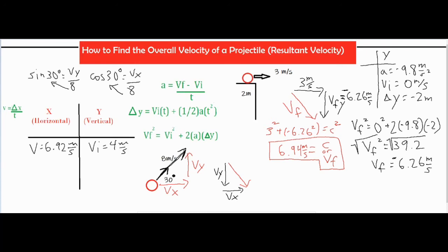I used sine of 30 degrees to get the opposite side: Vy over the hypotenuse of 8. And I used cosine of 30 degrees to get the adjacent side: Vx over 8. Multiplying both sides by 8, Vy equals 8 times sine of 30 degrees, which gives 4 meters per second. And 8 times cosine of 30 degrees gives Vx equals 6.92 meters per second.